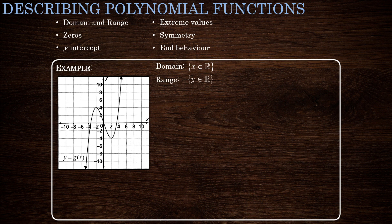For this function, the range is y is an element of the real numbers — it continues upward and downward forever and does not miss any y values. The range of polynomial functions is not necessarily always all real numbers, but in this case it is, and we'll talk more about that in the future.